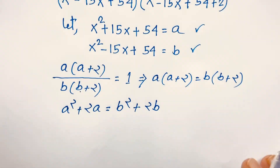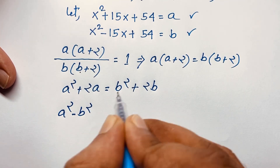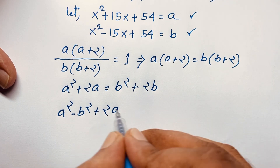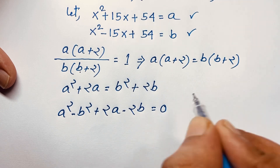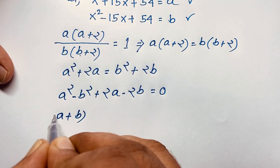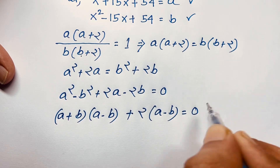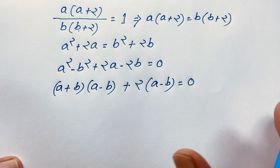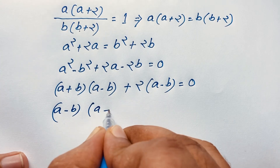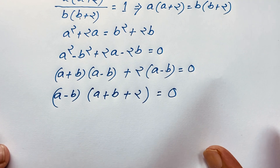Rearranging: a² - b² + 2a - 2b = 0. Factoring: (a+b)(a-b) + 2(a-b) = 0, so (a-b)(a+b+2) = 0. This gives us two cases: a - b = 0, or a + b + 2 = 0.